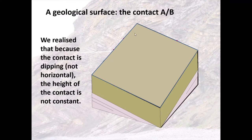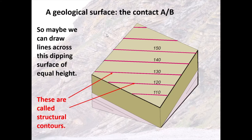For example, if we were sat on our contact — if we lifted off that top unit A and sat on the contact here — we'd be at a higher elevation than if we were to slide down this contact. So because the elevation across this plane changes, what we can do is draw lines across that plane that link points of equal height or equal elevation. Anywhere along one line we'd be at 160 metres above sea level, and along the next at 140, 130, 120, and so on. These lines show the height of a structure — whether it's a bedding plane, a fault plane, or an unconformity — and we call them structural contours.